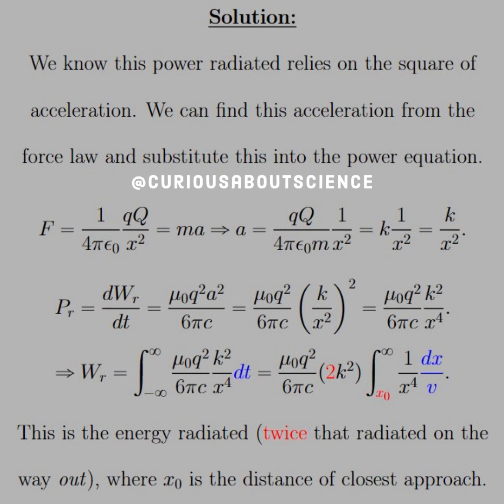So then the power radiated is equal to the rate of change of the energy radiated. But we know that the power radiated is mu naught Q squared A squared over 6 pi C. So if we plug in the A that we found, we get K over X squared squared. So that tells us we have K squared over X to the fourth. Now, if we want the ratio for the energy, we have WR for the energy is when we integrate from negative infinity to infinity over dt.